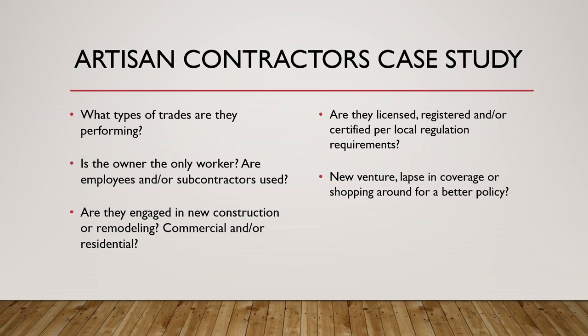It varies by carrier. If the subcontractors do have their own insurance and those costs are 40% or more of your client's operation, then we would definitely be looking to write them under the General Contractors Program rather than under the Artisan Contractors Program. It's a misconception to believe that when your client has a General Contractors License that they are going to be rated as a General Contractor. My markets and many others mainly rely on annual sales and subcontractor costs to determine if we are rating a risk under the Artisan Contractors Program or the General Contractors Program.